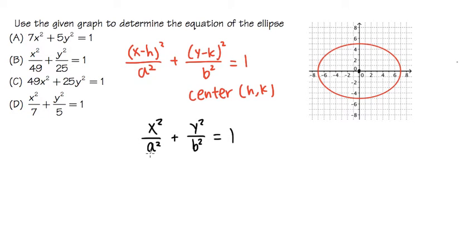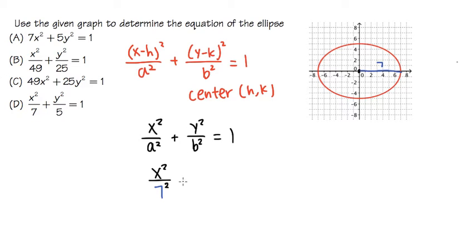Now we need to figure out the a value and the b value. The a value is underneath the x, and you associate x with left or right horizontal movement. To find a, we go to the center and count how many units we move horizontally to reach the ellipse. Counting: 1, 2, 3, 4, 5, 6, 7 — we move to the right 7 times. So a equals 7, giving us x squared over 7 squared.